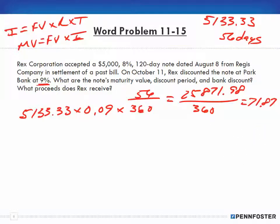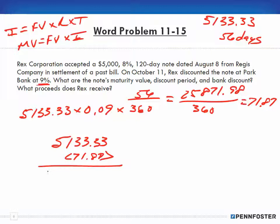We take our maturity value of 5,133.33 and we subtract the discount amount of 71.87, and that gives us our proceeds of 5,061.46.